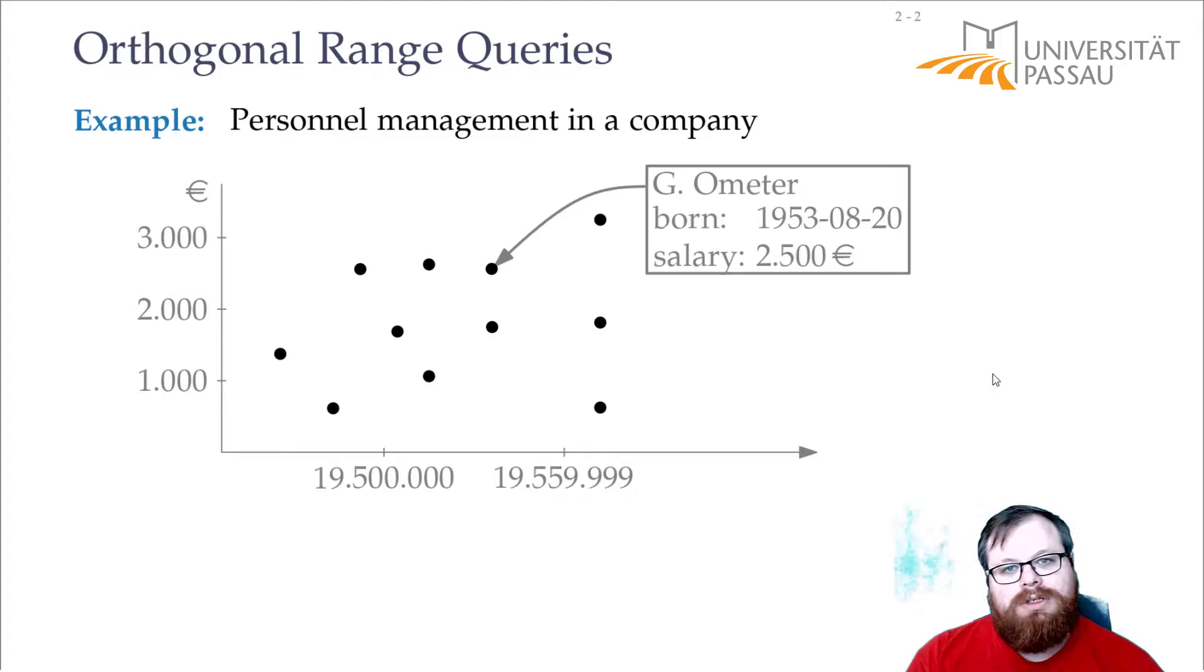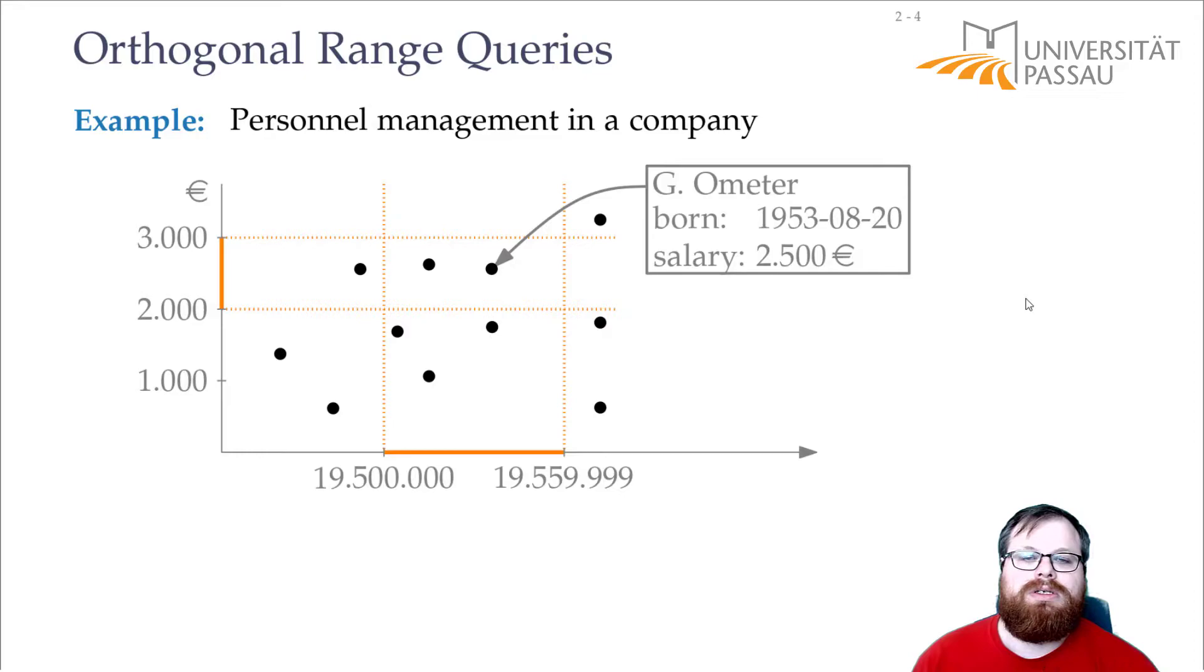Now some queries that you want to do: you want, for example, to know who in your company earns between two thousand and three thousand euros, that's everybody who is in this strip, and who was born between 1950 and 1956, who is everybody in this strip.